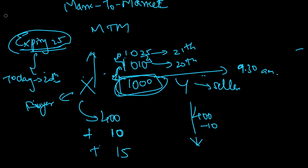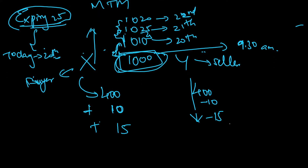So minus 15 from the seller. Then imagine the next day, the 22nd, the price comes down to 1020. Now the price is going down from 1025 to 1020. In this case the seller will be happy. We give the effect for the gap from 1020 to 1025, which is 5. The seller is gaining 5, and it is coming from the buyer's pocket — the buyer will lose 5.